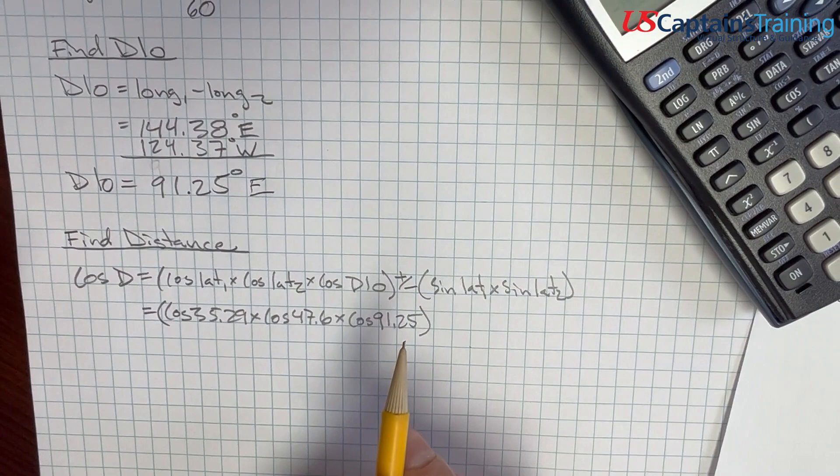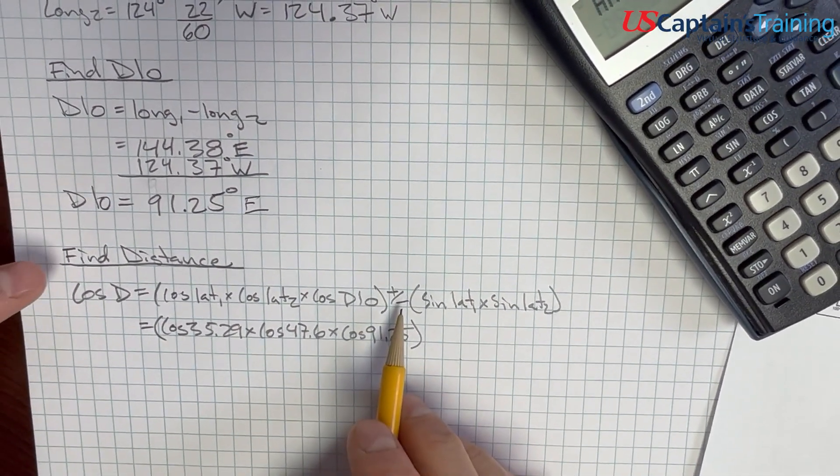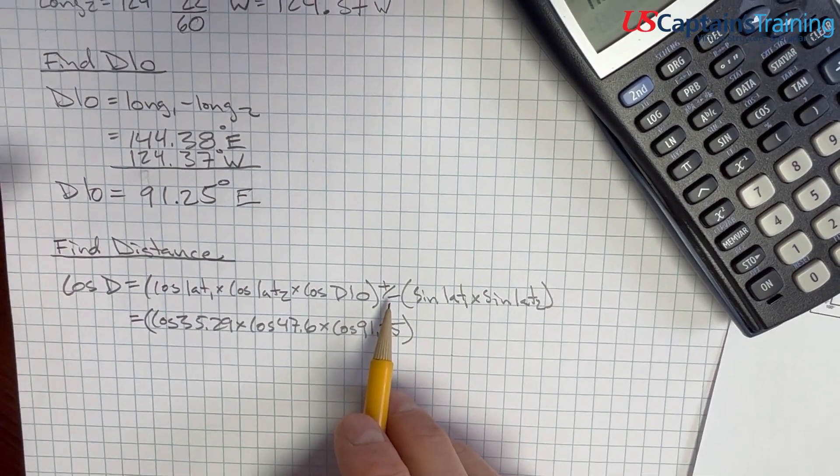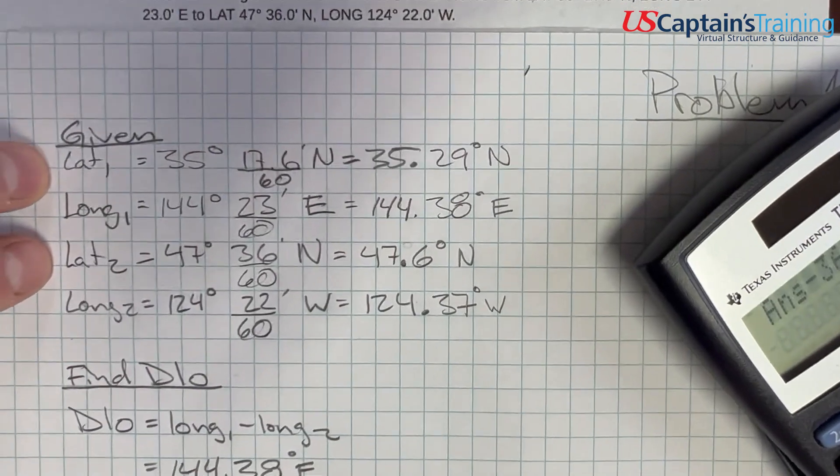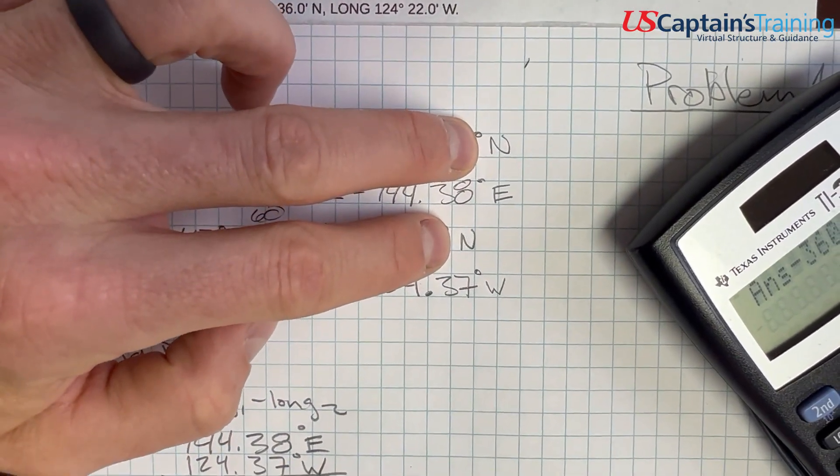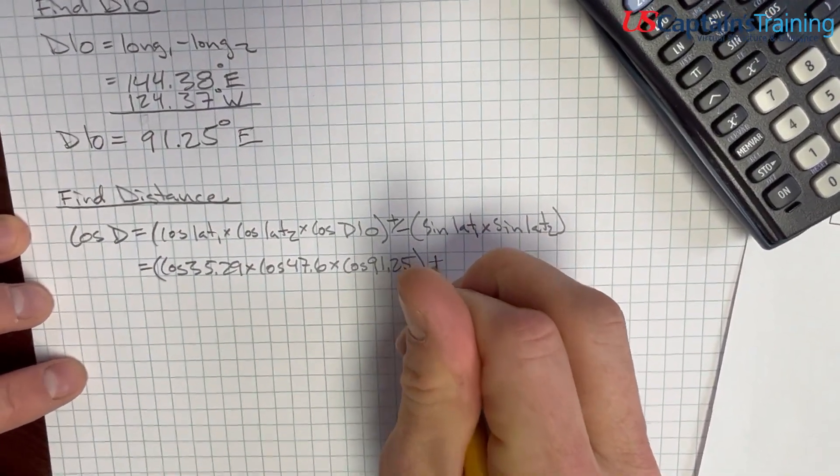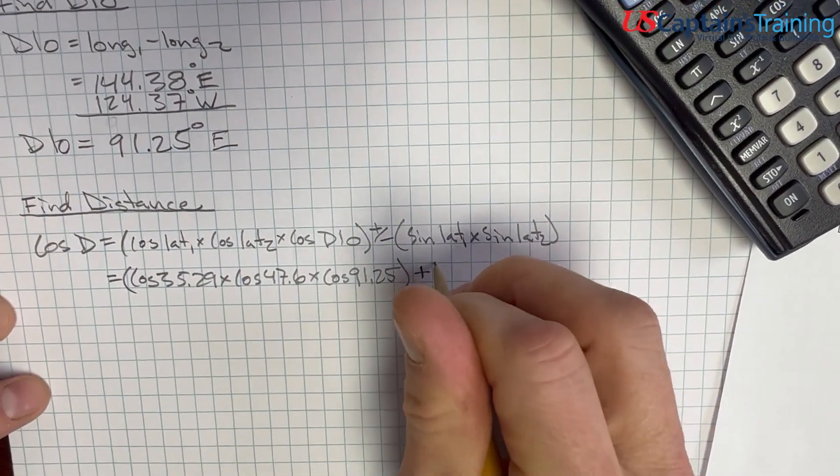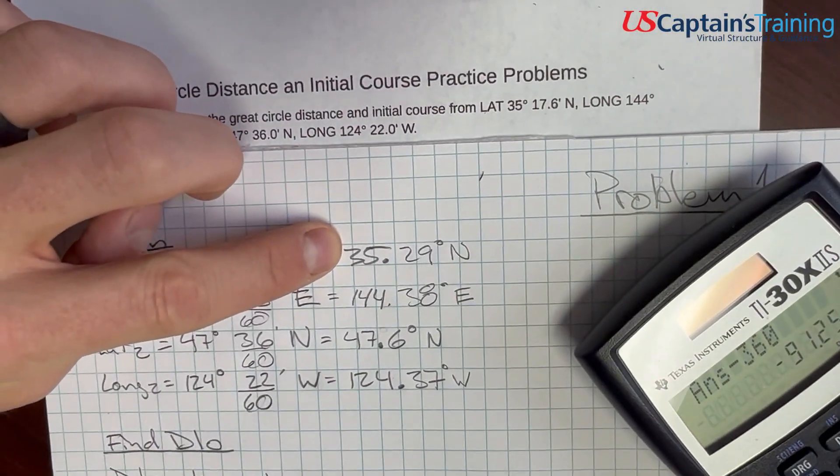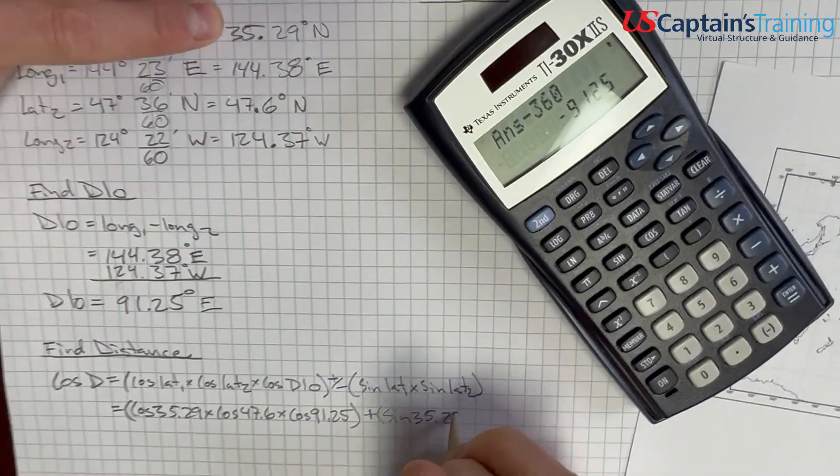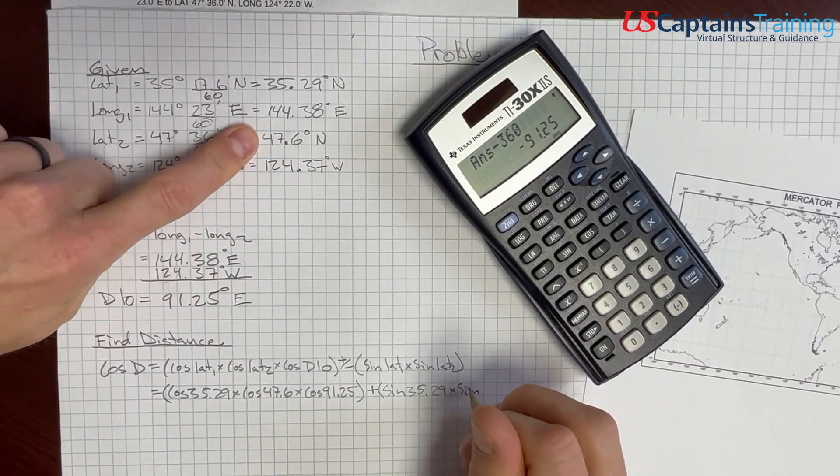And then, this plus or minus, this is where if you cross the equator, it is minus. If you do not cross the equator, it is plus. And, you see our lat 1 and lat 2, same names. They're both north, so we add. And then we go and say sine lat 1, 35.29, times the sine of lat 2, 47.6.